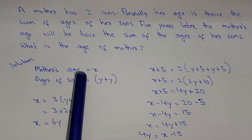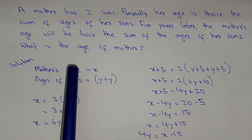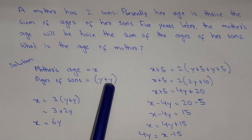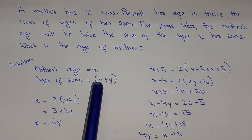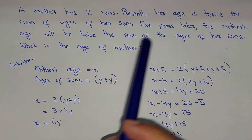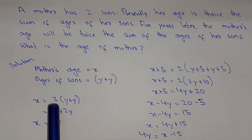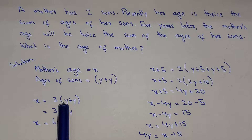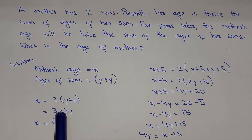So the present age of the mother will be x, and we suppose the age of each son to be y, so the two sons together are y plus y. Now it is saying that presently her age is thrice the sum of the ages of her sons, which means x equals 3 multiplied by y plus y. So 3 into 2y gives us x equals 6y.